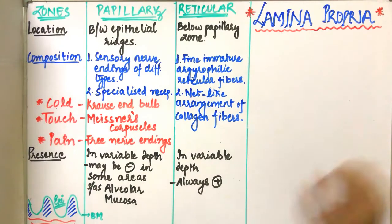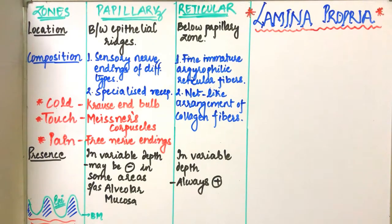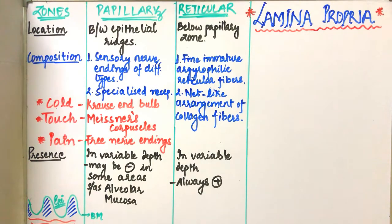Hello everyone, welcome back to my channel. Today's topic is lamina propria, or the connective tissue part of the oral mucous membrane. Lamina propria is the connective tissue of variable thickness which supports the epithelium.